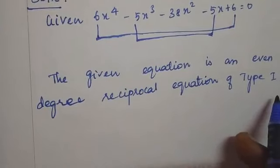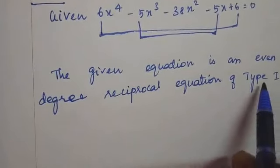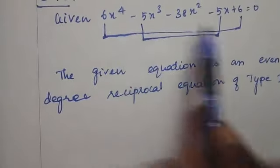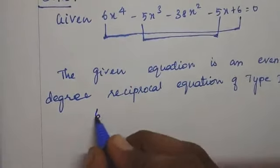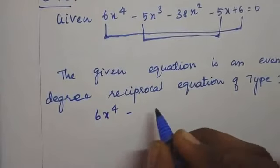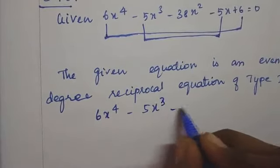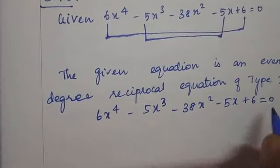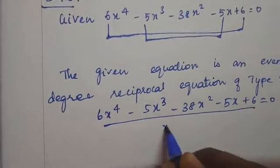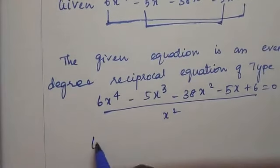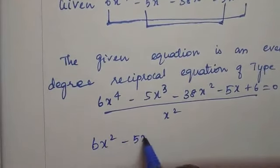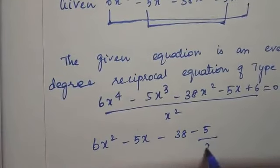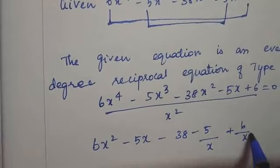For a type 2 even-degree reciprocal equation, we divide the given equation by x². Dividing 6x⁴ - 5x³ - 38x² - 5x + 6 = 0 by x² gives: 6x² - 5x - 38 - 5/x + 6/x² = 0.